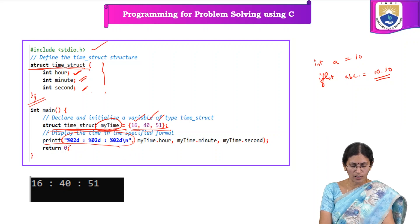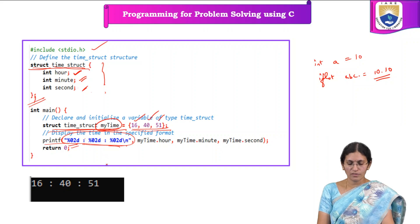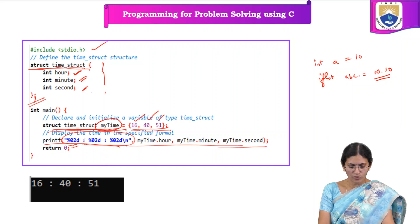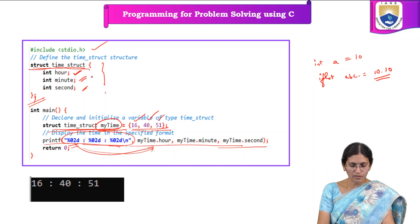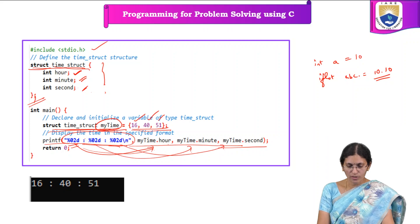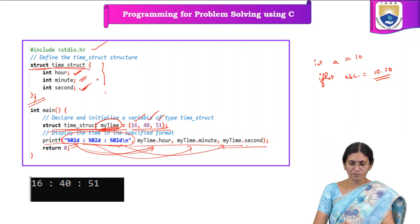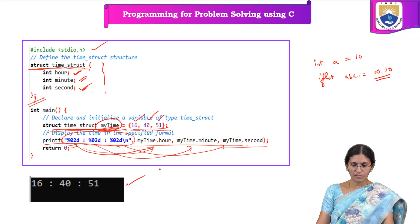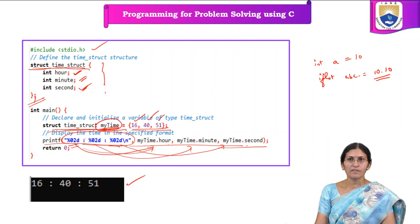The first value corresponds to the first percentage format specifier — my_time dot hour — the second corresponds to my_time dot minute, and the third corresponds to my_time dot second. This is the output which is printed on the screen. It is a very simple program.